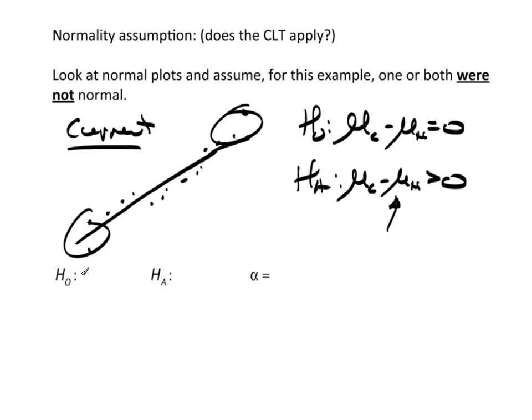But we can't because of the violation of the assumption. So, instead, we're going to say theta of the current minus theta of the new equals zero. And then the alternative is theta of the current minus theta of the new is greater than zero. Alpha, we're going to leave at 0.05 because there's nothing here regarding the significance level. And we will use the Wilcoxon rank sum test.